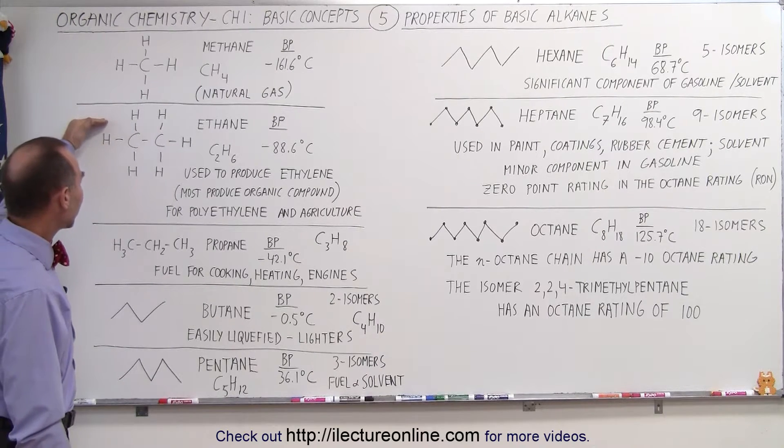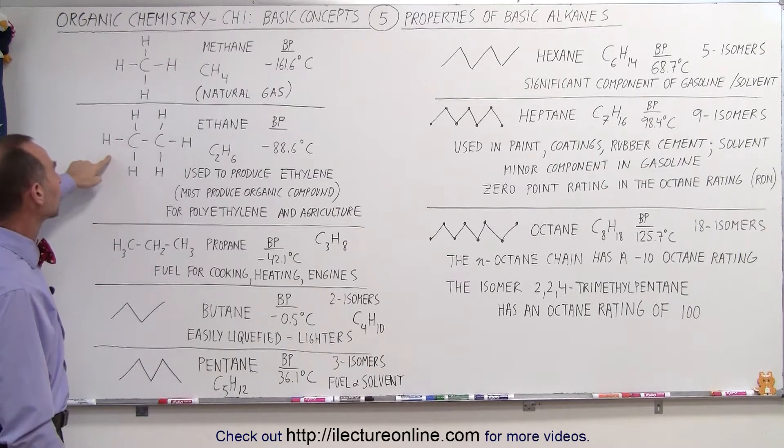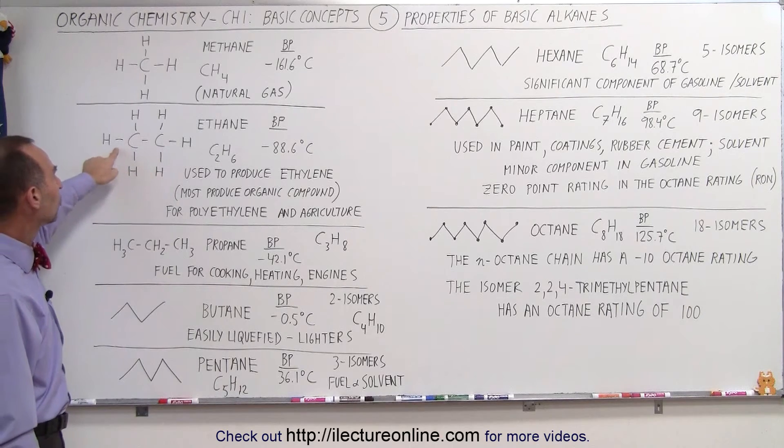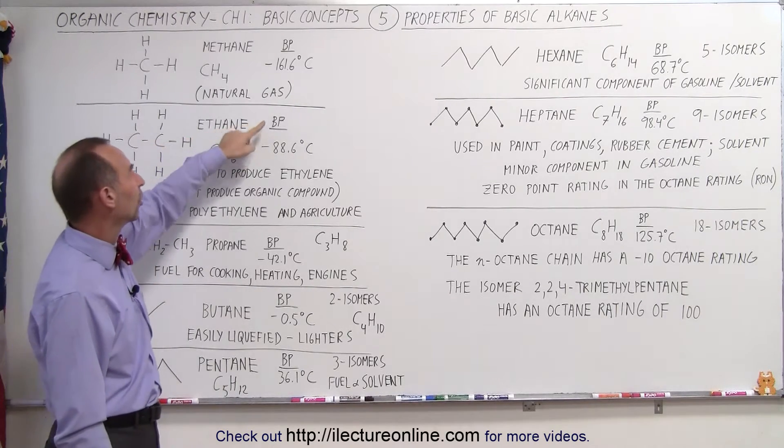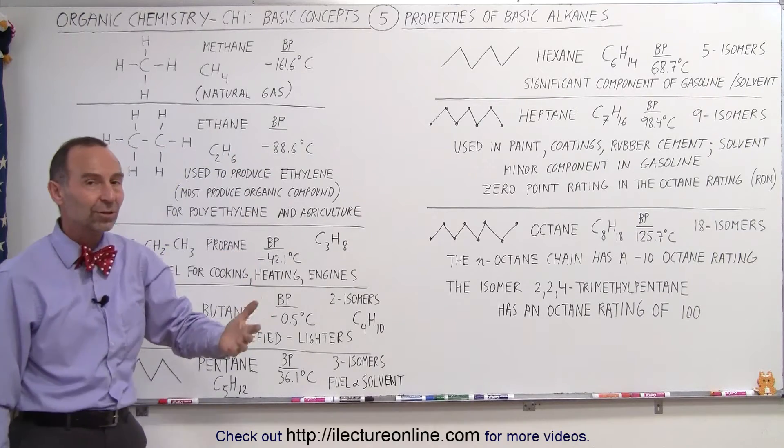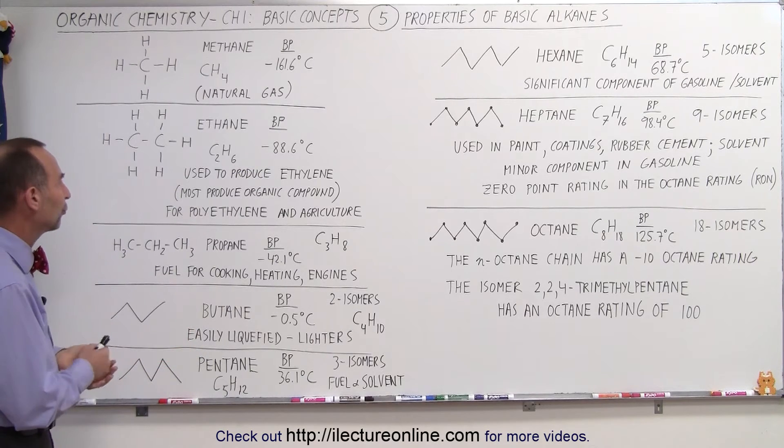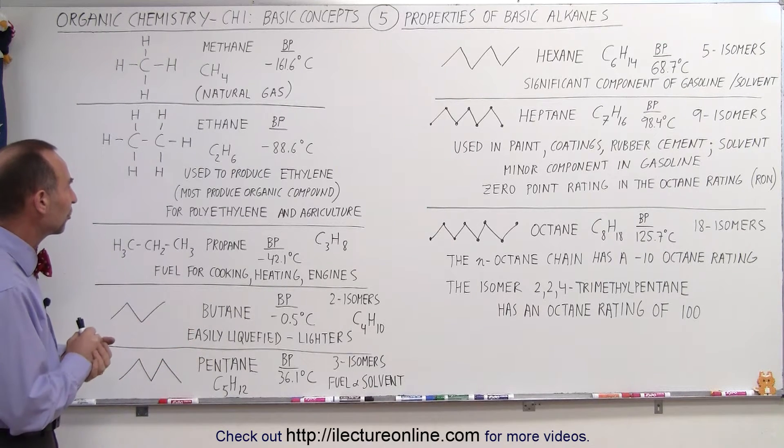The next alkane, or I should say the next compound or molecule is ethane. It has two carbons. Notice because of the two carbons now, the boiling point is higher at minus 88.6 degrees centigrade. That's still very cold. So again, ethane will be in a gaseous form under normal standard temperature and pressure.